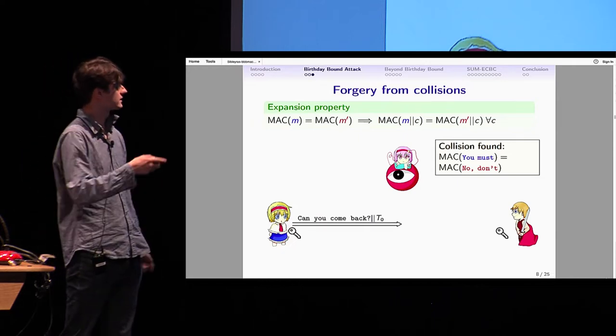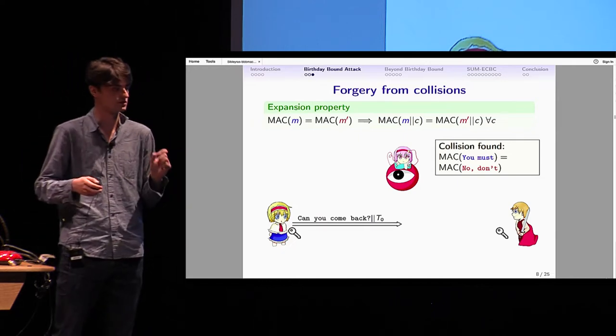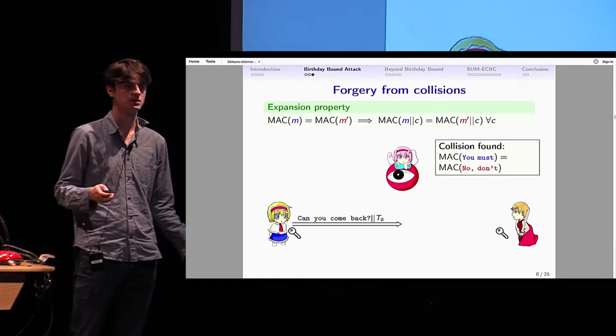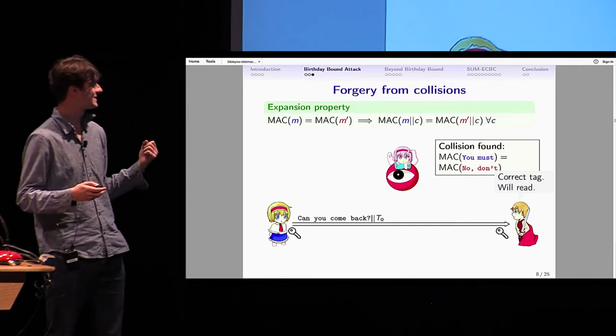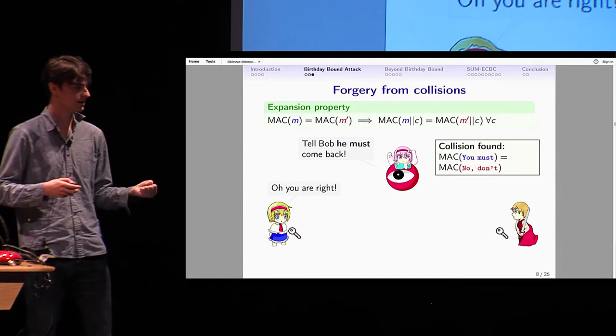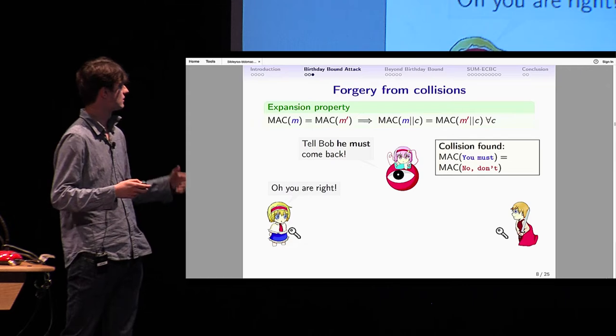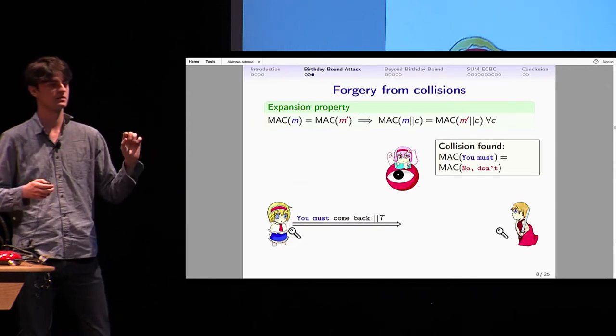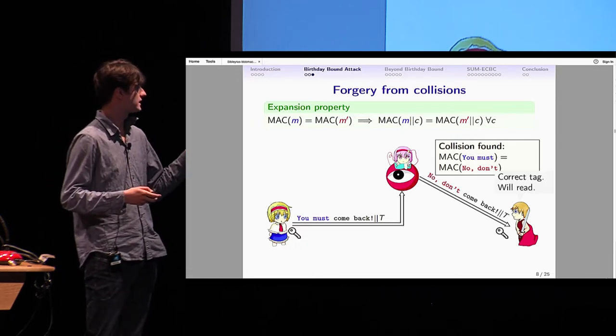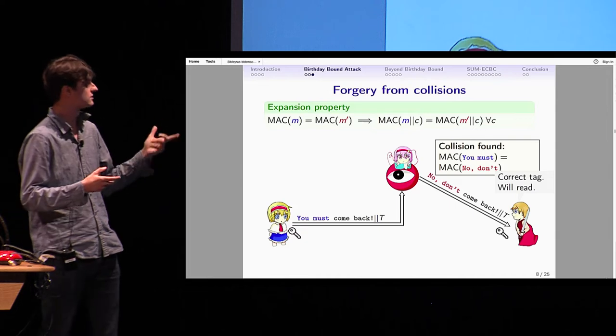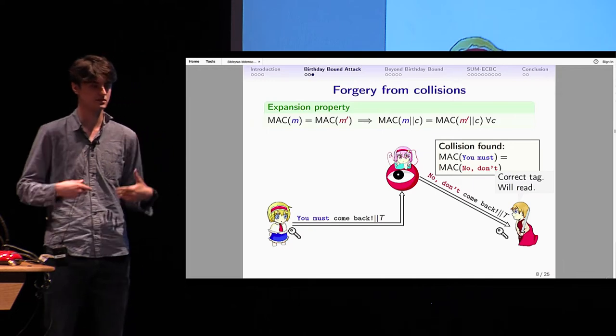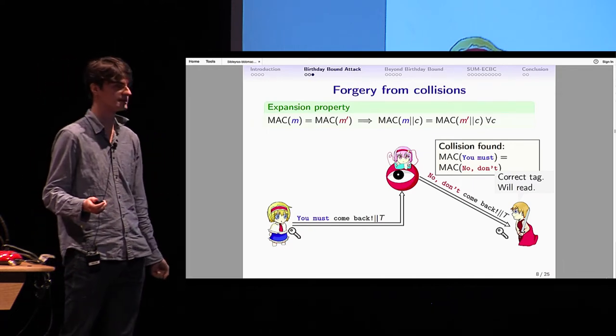When she gets a collision, she uses this expansion property to do a forgery. Imagine she found that the MAC of 'you must' equals the MAC of 'no don't'. If Alice sends 'can you come back' to Bob, she cannot do anything. But she convinces Alice to send a message with the good prefix. So now Alice sends 'you must come back'. She keeps the suffix 'come back', modifies it with 'no don't', and knows that the tag will stay the same, so she copies the MAC. Bob is fooled. He received a message, acknowledged it, but it was modified. That's a forgery.